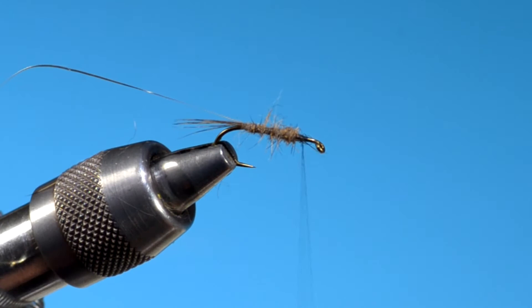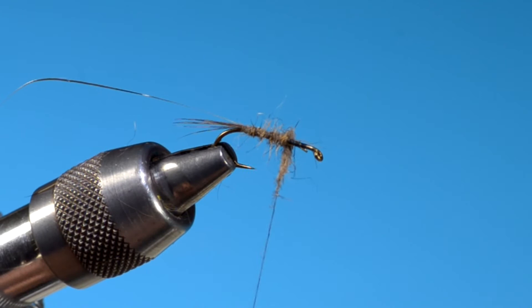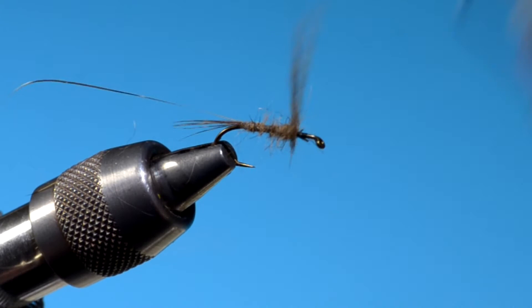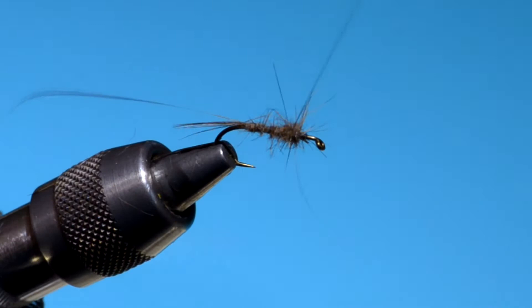Now, the exception might be if you're imitating caddis or some other hellgrammites or something, and you're tying a little larger size, or stonefly nymphs. You're probably going to want it just to be buggy everywhere in that instance. So always think about what you're trying to accomplish.